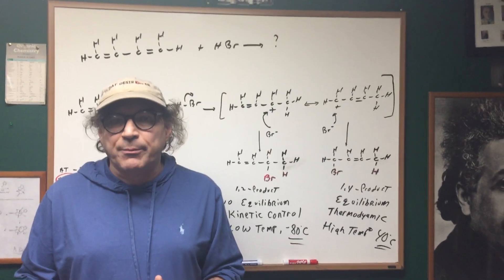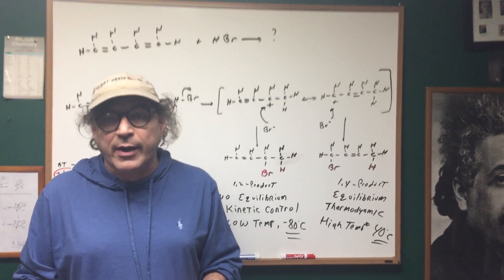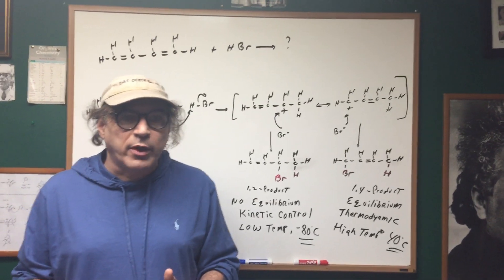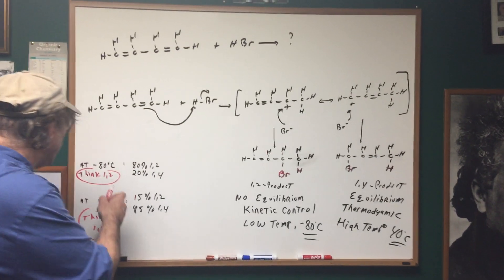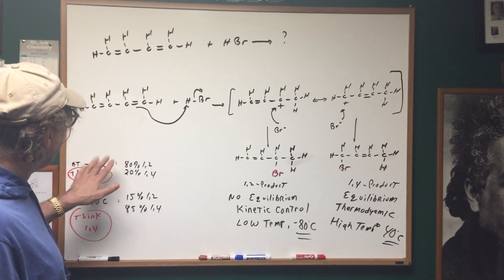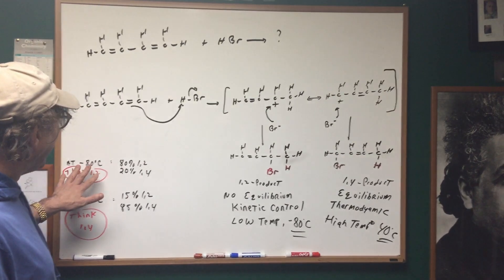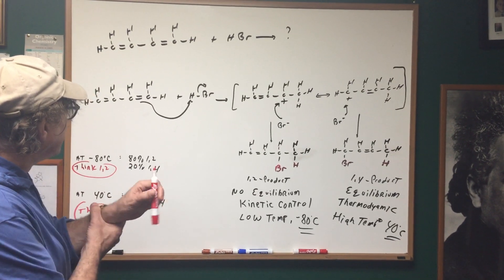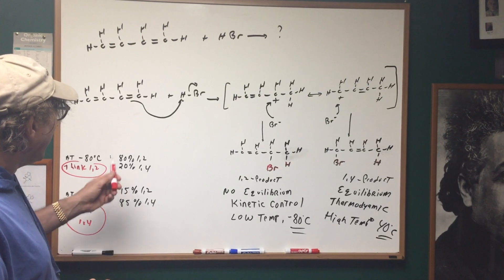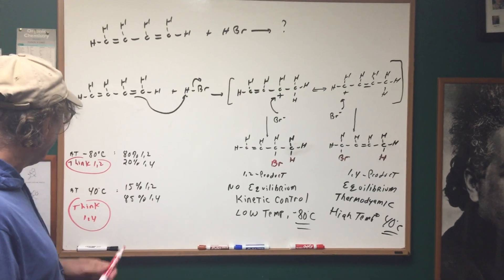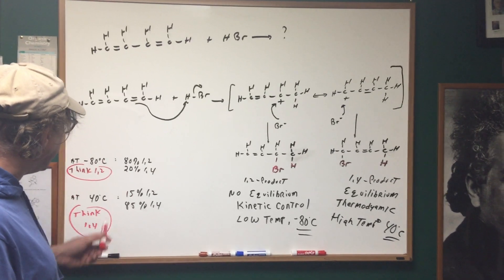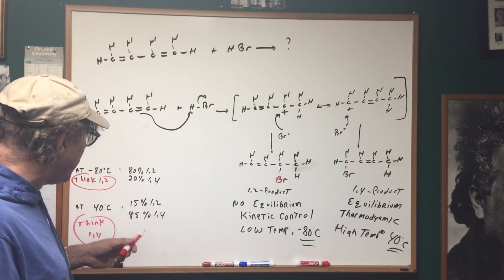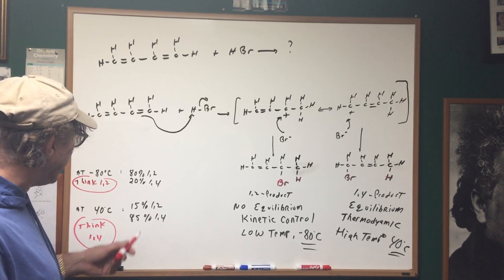The temperature is going to be the deciding factor on which product is going to dominate. Would it be the 1,2 product or the 1,4 product? As you can see, at minus 80 degrees the 1,2 dominates, and I went to the literature and saw that it was 80% 1,2 and 20% 1,4. At 40 degrees Celsius it was the reverse: about 15% 1,2 and 85% 1,4.